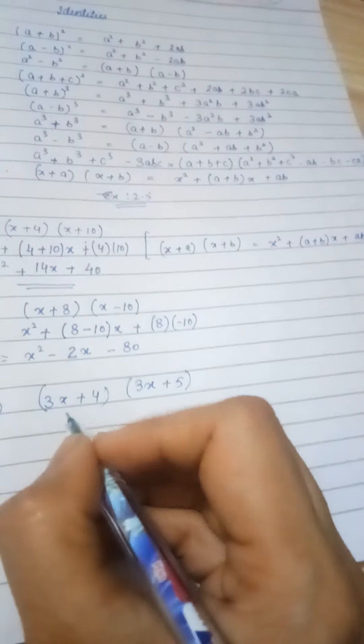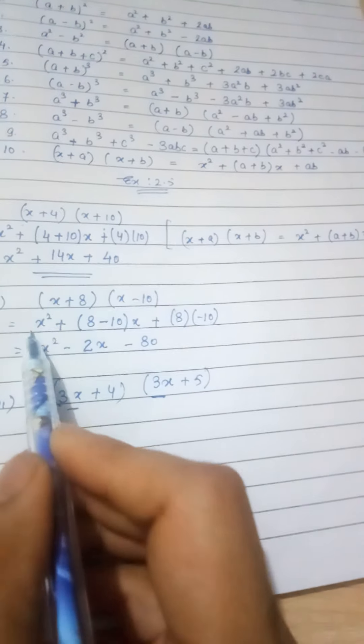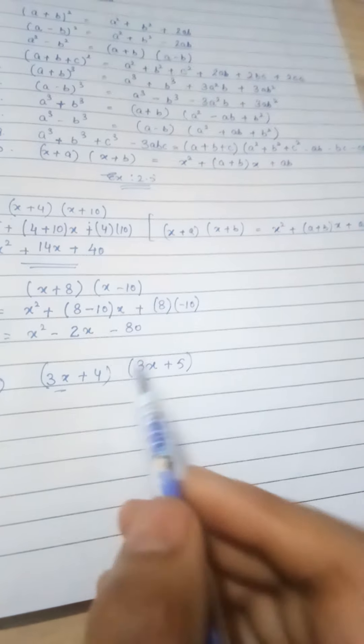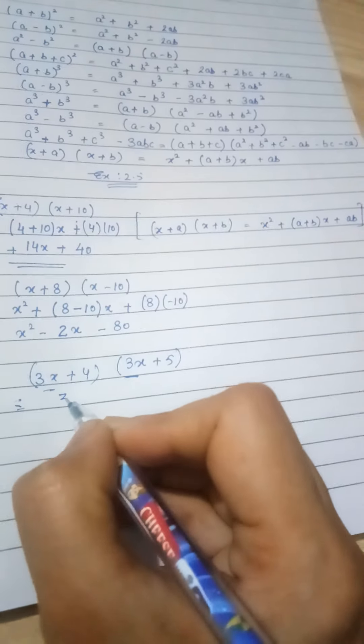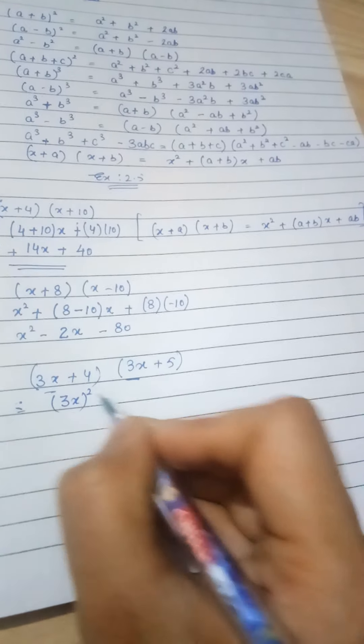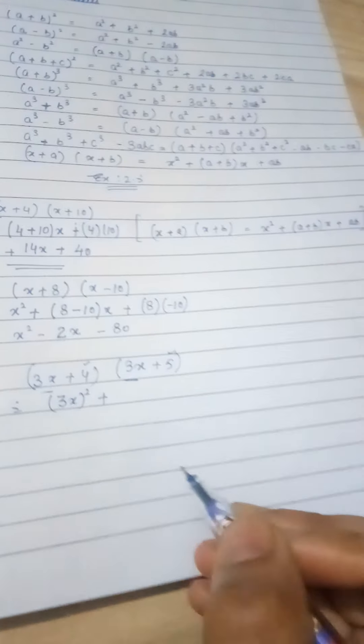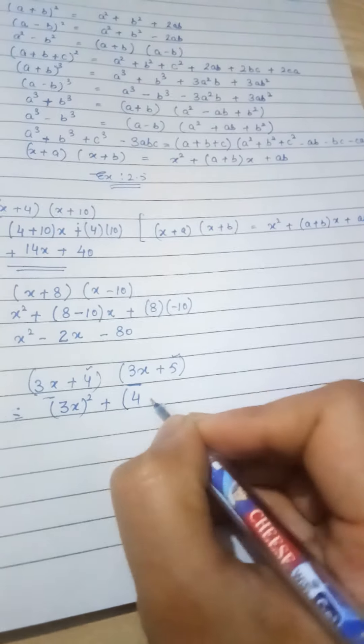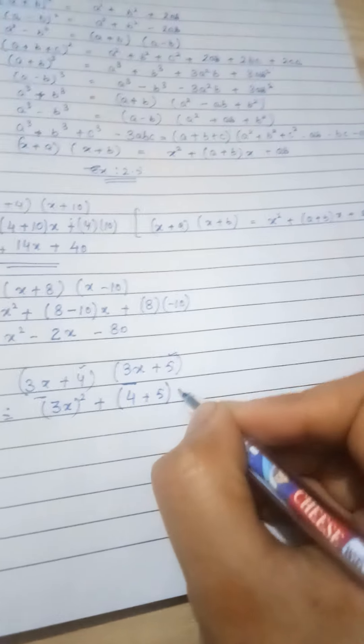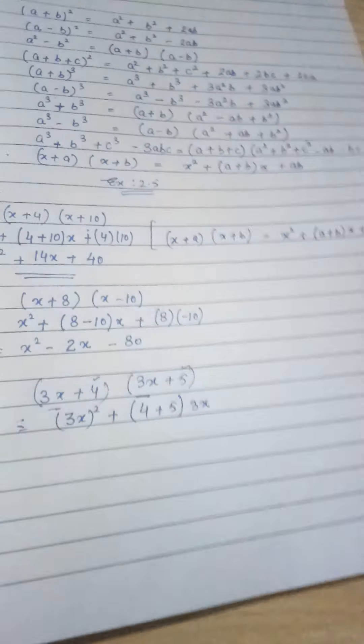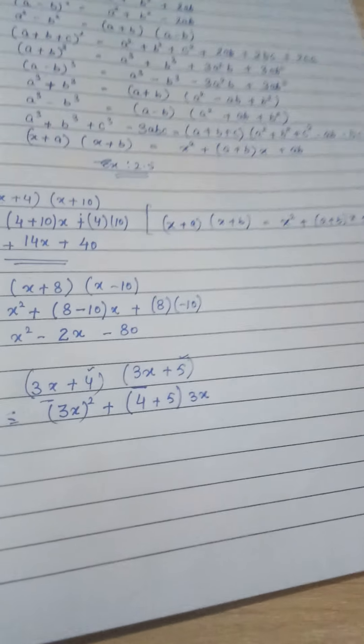Now we will do the third part. It is similar, so let me do it for you so that the concept will be clear. 3x plus 4 times 3x plus 5. Here we have 3x instead of x. So now we have 3x squared. Here the term is 3x.